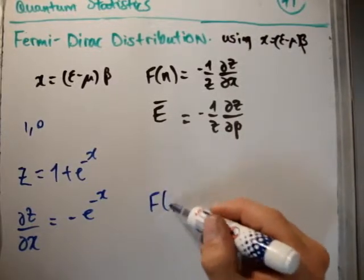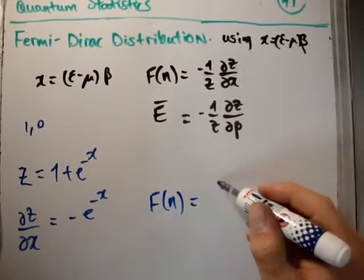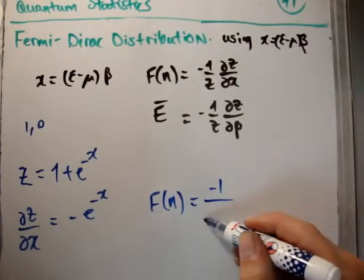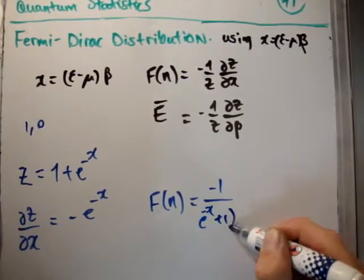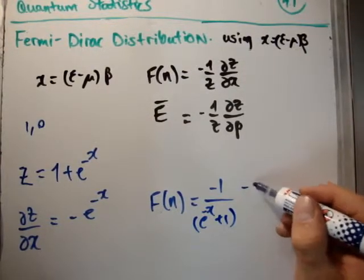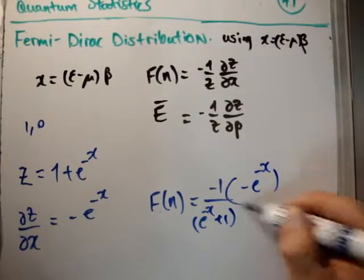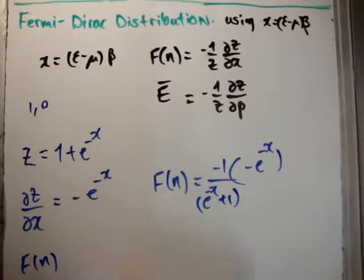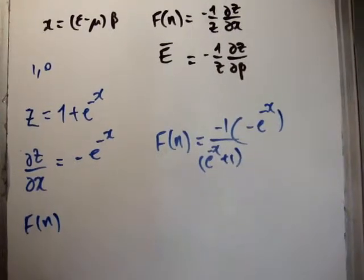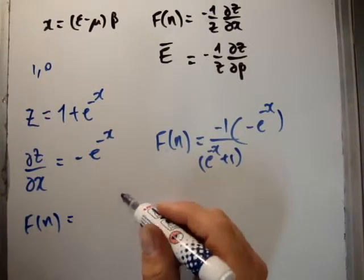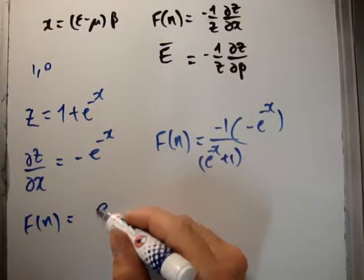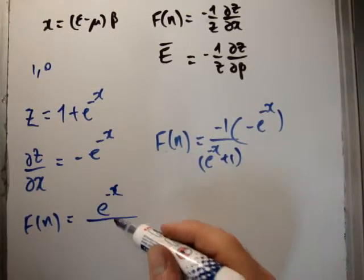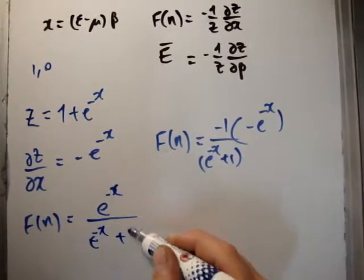We can rewrite our occupancy function as minus 1 over e to the minus x plus 1, and we have this minus e to the minus x factor also. So that means the function now becomes e to the minus x over e to the minus x plus 1.